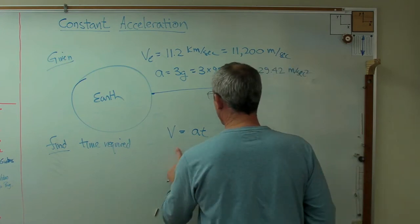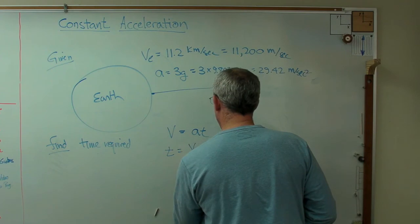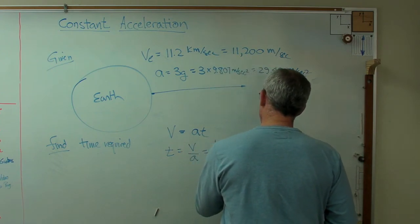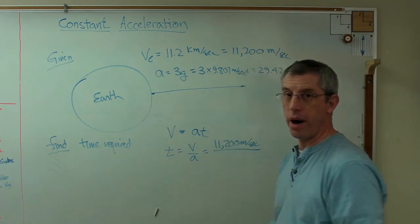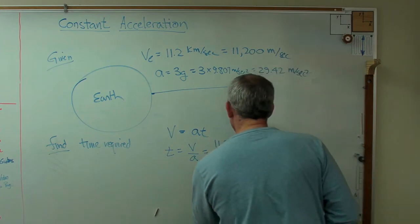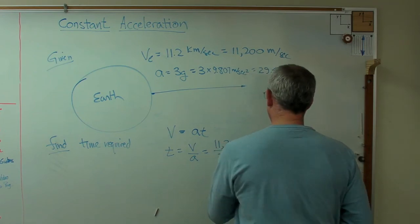So this is pretty easy. We're going to solve for T. So T equals V over A, and that means 11,200 meters per second divided by 29.42 meters per second squared.